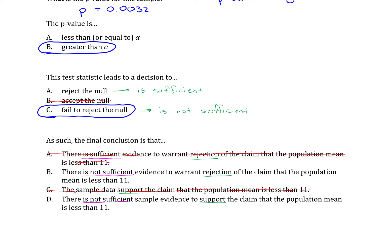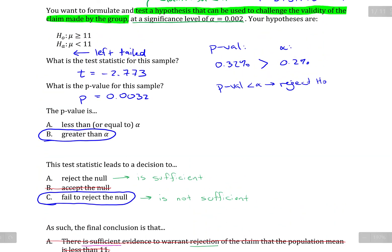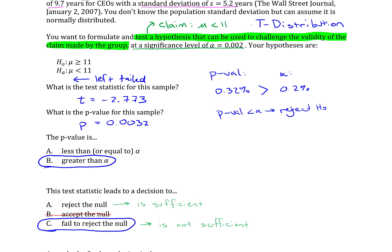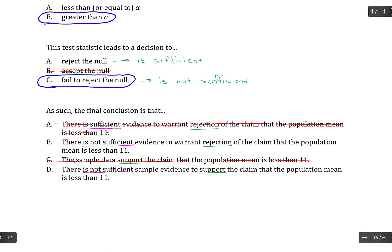And we have to then decide if we're rejecting or supporting the claim. Now, there's a couple of ways of doing this here. One is to memorize where the claim is and what the interpretation is. So for instance, our claim was that the mean is less than 11. So the claim here is in the alternative hypothesis. And if the claim is in the alternative, we're trying to support it. If the claim is in the null, we're trying to reject it. And it really is just that easy. So you can come down here and safely throw B out, leaving D as our final answer here.